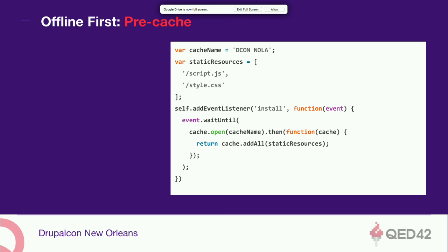Two common use cases: by default, service workers fetch anonymous responses — they don't send cookies in the request. You can set a 'credentials: true' flag so the cookie is sent along with the request headers, receiving an authenticated response. If you need to cache cross-origin requests, you can pass a 'mode' flag — by default it's set to 'cors', respecting CORS principles. You can set it to 'no-cors' and it will still fetch a response from a different origin, but it will be an opaque response — you won't know if the status succeeded, but the data will be in the cache.